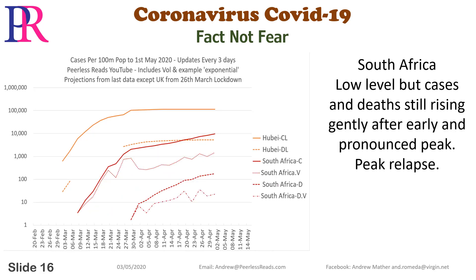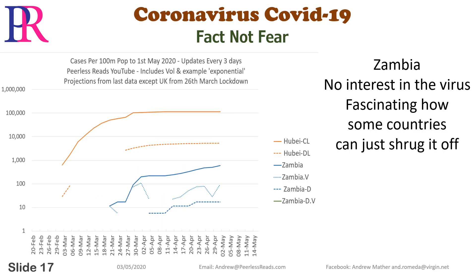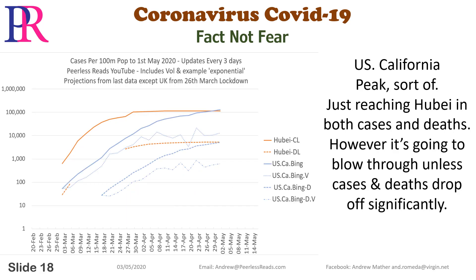South Africa: low level, but cases and deaths still rising gently. After an early and pronounced peak — peak relapse. Zambia: no interest in the virus. Fascinating how some countries can just shrug it off.